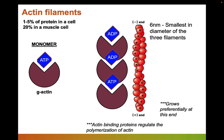There's a lot of actin in the cell, but not all of it is filamentous. There's a balance between G-actin and F-actin, and there are many actin-binding proteins — which we won't have time to cover — that regulate when actin polymerization happens and in what direction.